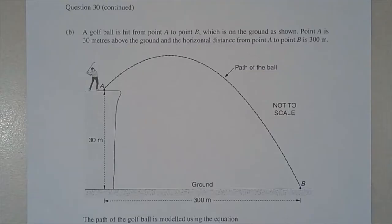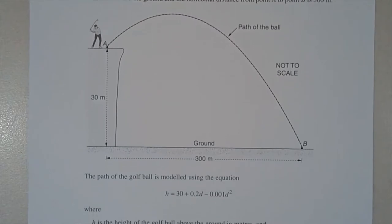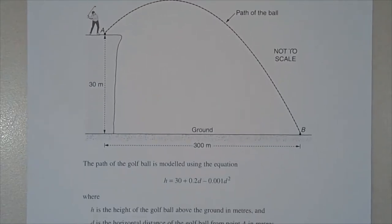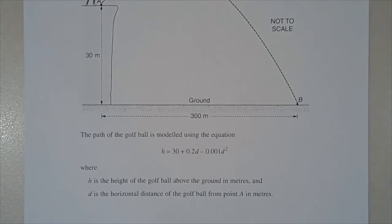Question 30B. A golf ball is hit from point A to point B, which is on the ground. Point A is 30 metres above the ground and the horizontal distance from point A to point B is 300 metres. The path of the golf ball is modelled using the equation H equals 30 plus 0.2d minus 0.001d squared, where H is the height above the ground in metres and d is the horizontal distance from point A in metres.